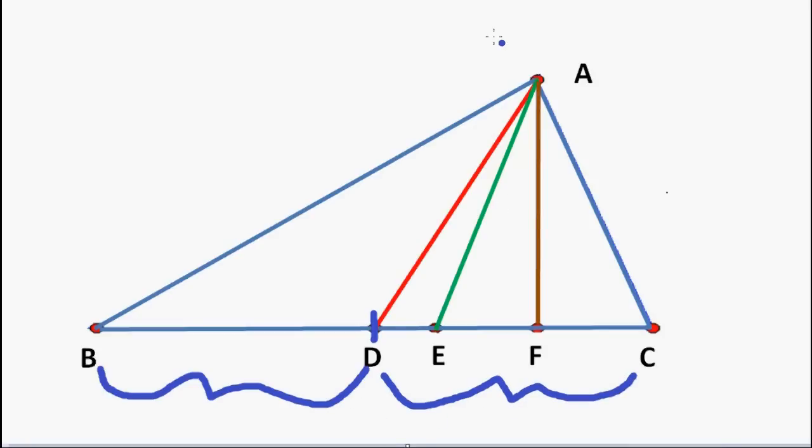So AD is known as the Median of the Triangle. This divides the total area of the Triangle into two equal parts.